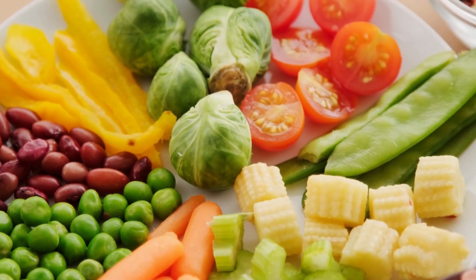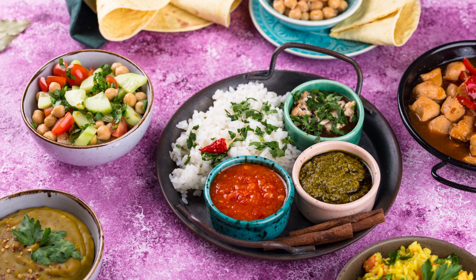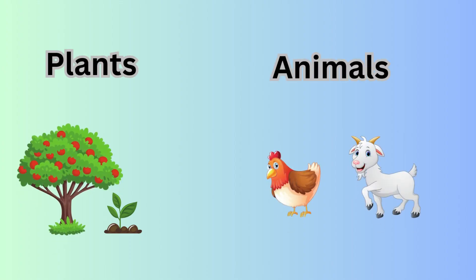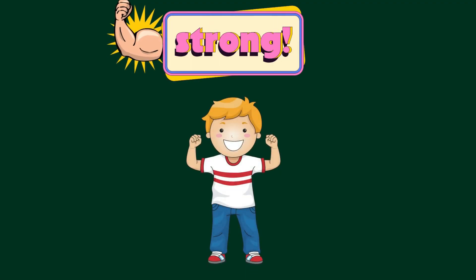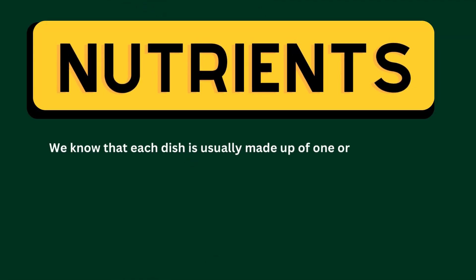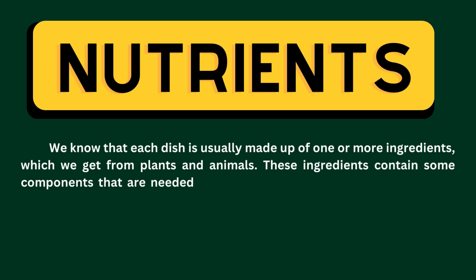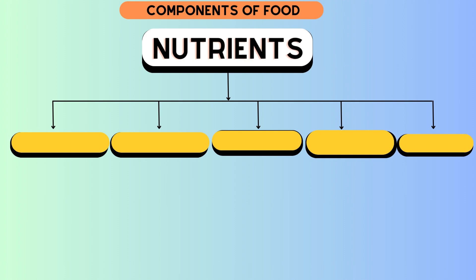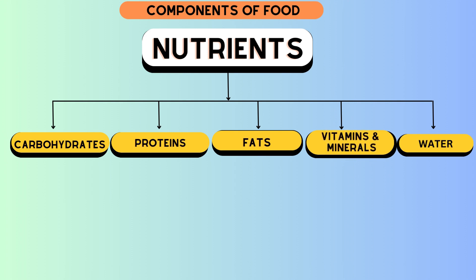We know that each dish is usually made up of one or more ingredients which we get from plants and animals. These ingredients contain some components that are needed by our body to stay strong, and these components are called nutrients. The major nutrients in our food are carbohydrates, proteins, fats, vitamins, minerals, and water.